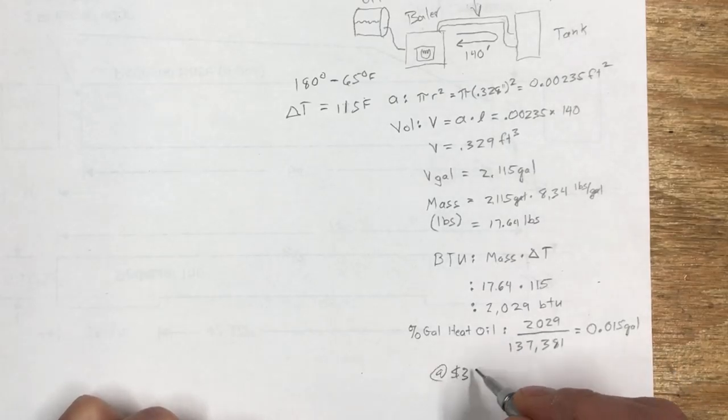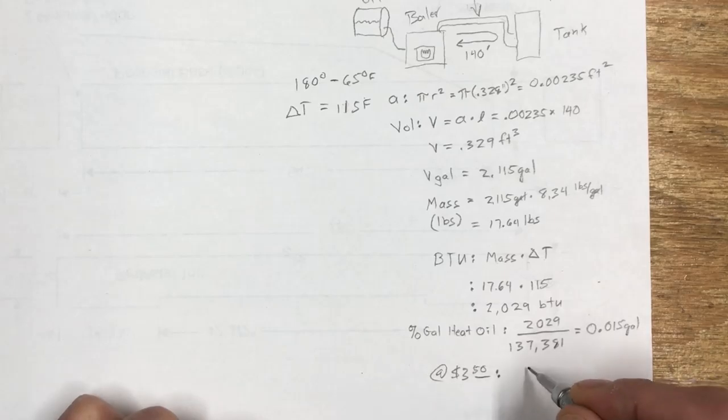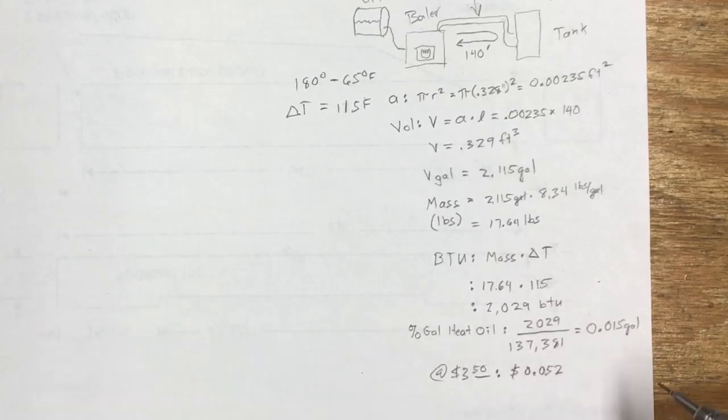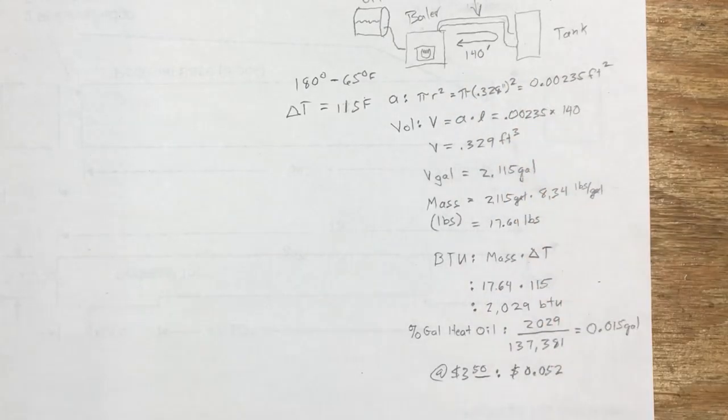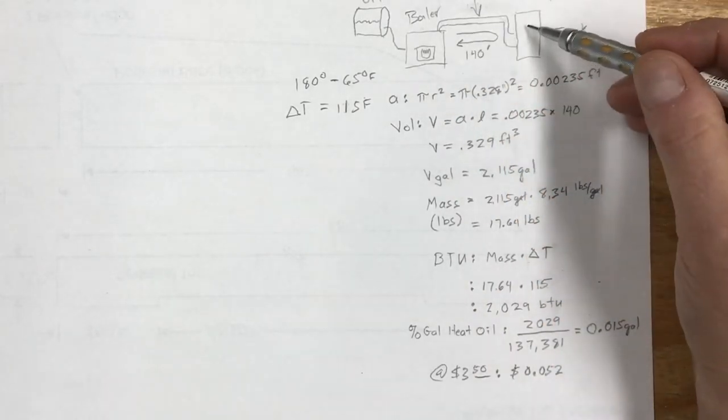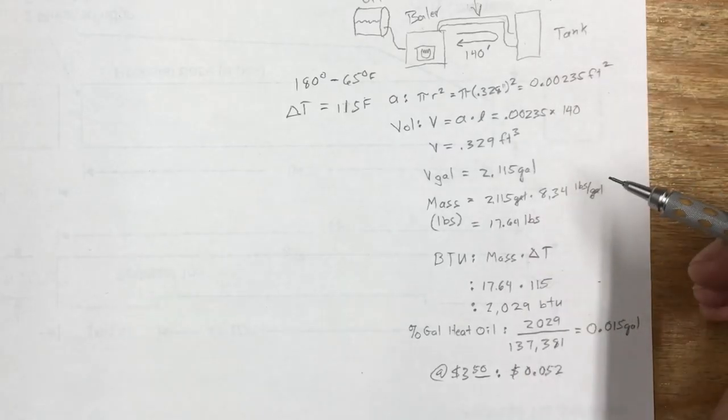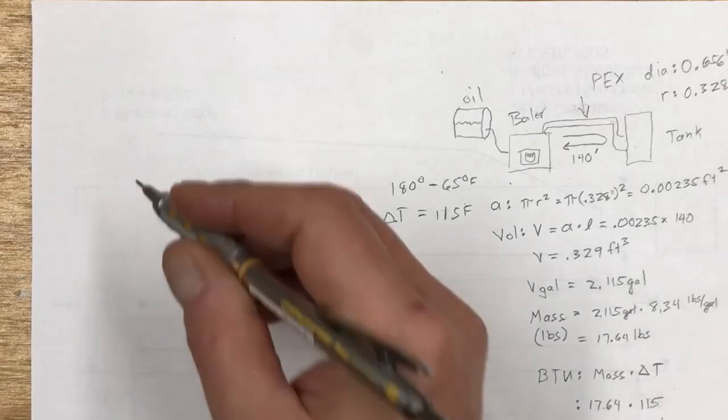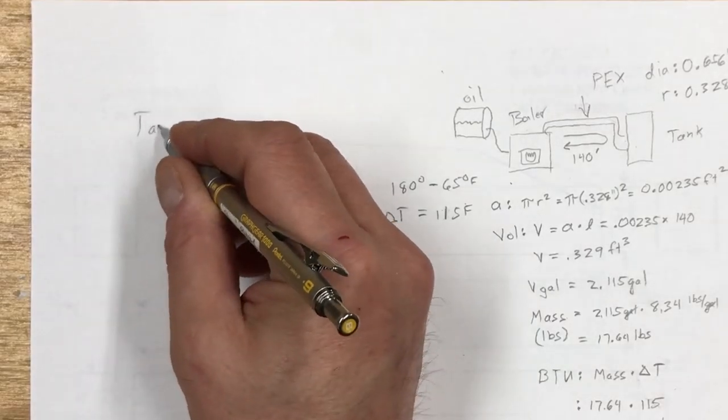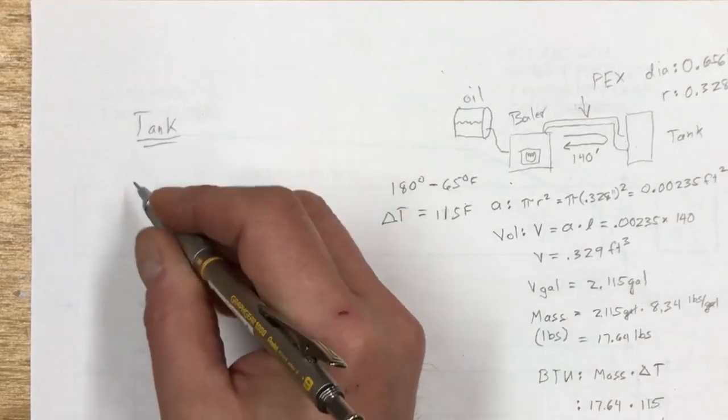At three dollars and 50 cents a gallon that turns out to be in American dollars 0.052, about five cents worth of heating oil is lost in these PEX tubes after the boiler has brought the hot water tank up to full temperature. So maybe five cents is a lot maybe it isn't. I guess there's different ways to look at that but one way would be to wonder how much does it cost in terms of dollars of oil to heat the hot water tank.